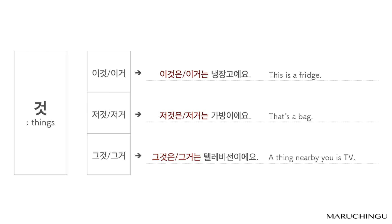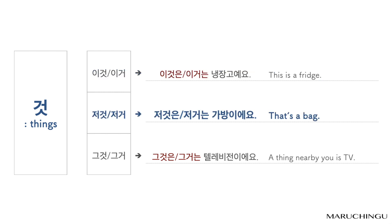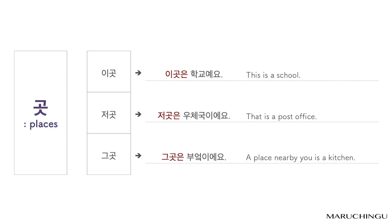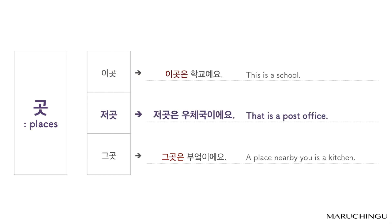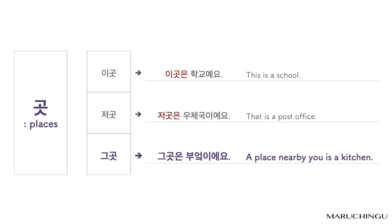Let's go one by one. 것 (things): 이것은/이거는 냉장고예요. 저것은/저거는 가방이에요. 그것은/그거는 텔레비전이에요. 곳 (places): 이곳은 학교예요. 저것은 — 그곳은 부엌이에요.